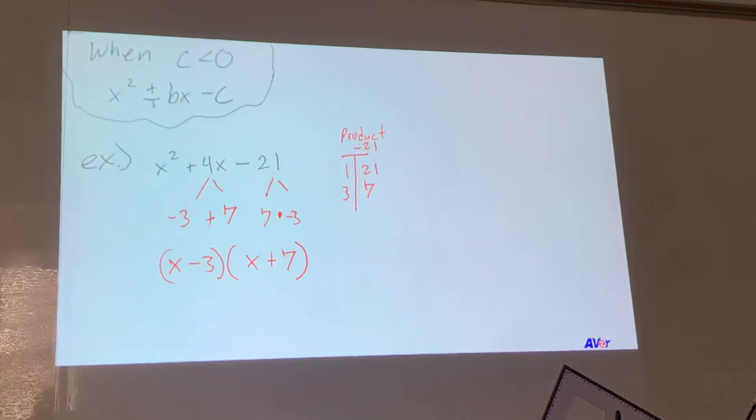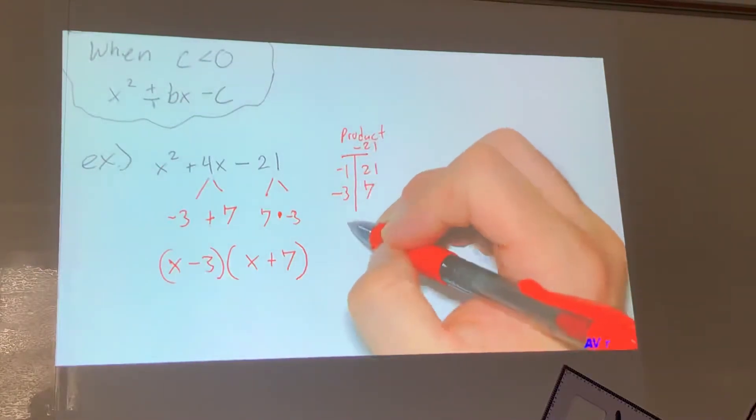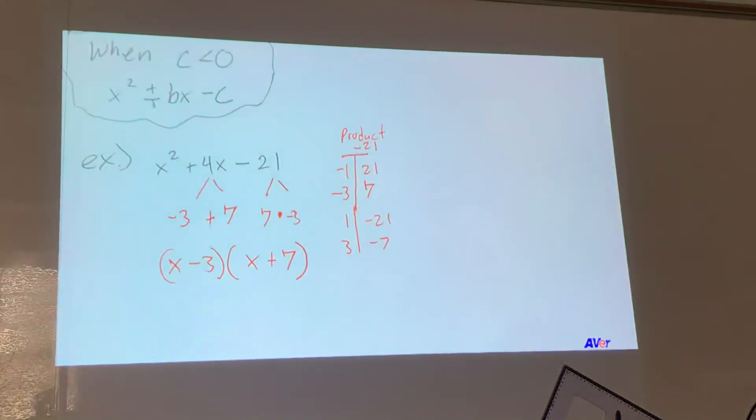So this product table or this factor table, it's really just helping us see the numbers that can be possibilities. Now, if you want to go in more detail, you can. You could have made this a 1, a negative, like that. Then you would have had to do positive 1, negative 21, and positive 3, and negative 7. If you want to do that, you can go that route. And you can see that this negative 3 and 7 add to give us positive 4. Okay, questions? Alright, let's do one more.